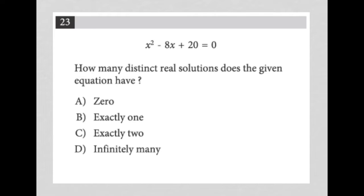This is a simplified question. We know because the question is short, typically between one and three lines long, and contains either an equation or expression. In this case, we have an equation. I'm going to rewrite this equation: x squared minus 8x plus 20 equals zero. The question asks, how many distinct real solutions does the given equation have?